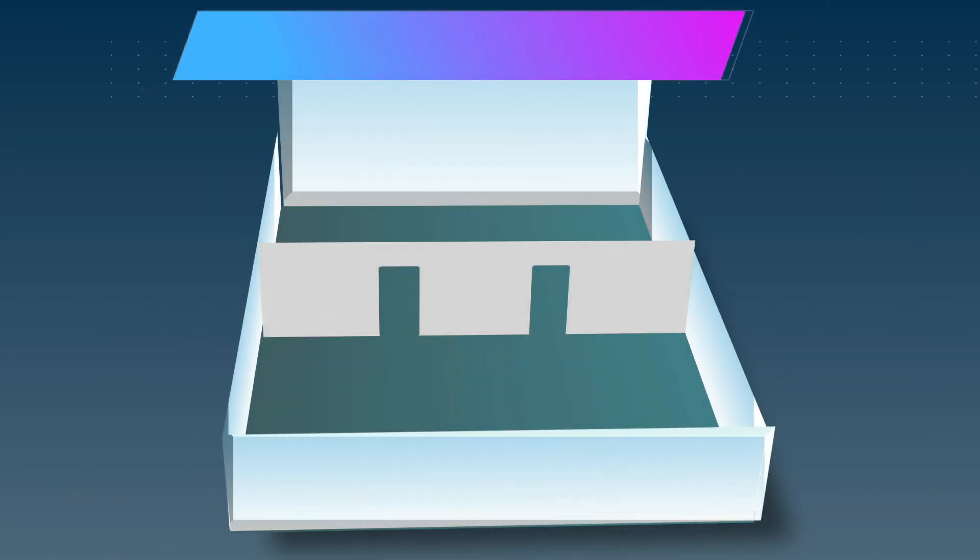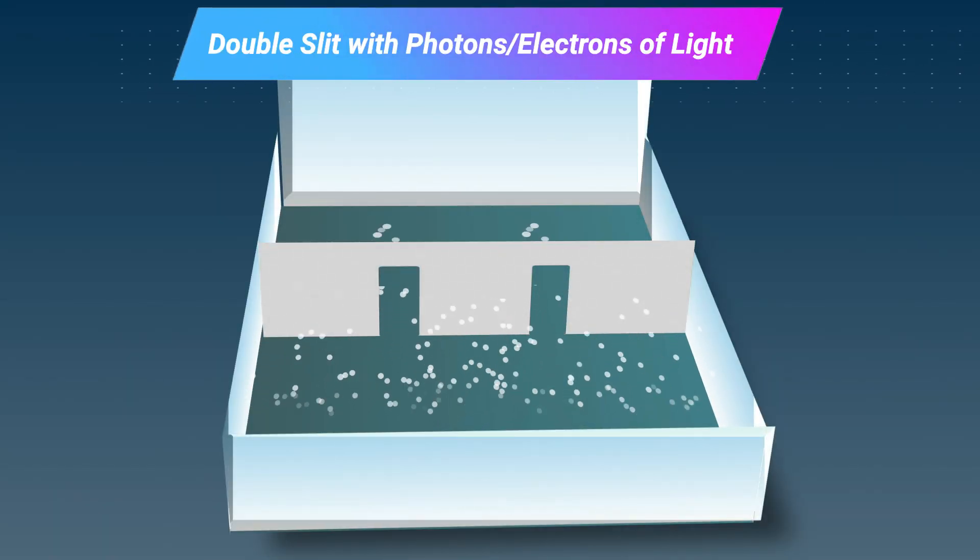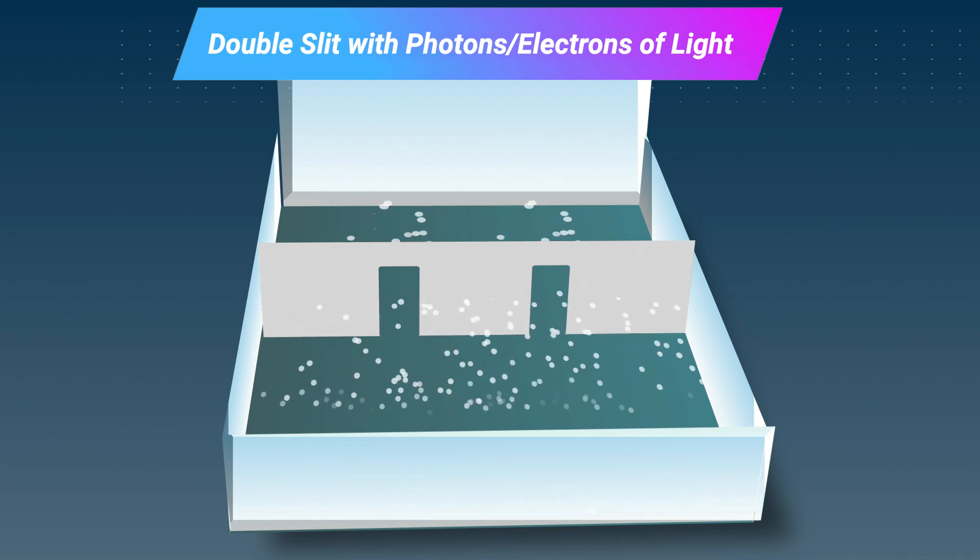So if we fire individual electrons at the screen, we should get particle behavior as individual electrons can't interfere with each other. Right? At first, the result seems to be random. But after some time, we get the same wave-like pattern.